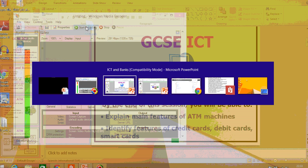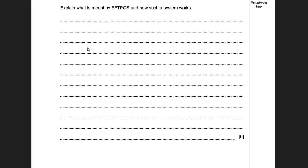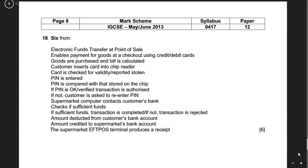Let's have a look at typical exam questions. One involves EFTPOS terminals. If you break it down: E is Electronic, F is Funds, T is Transfer, and P is Point Of Sale — so Electronic Funds Transfer at the Point of Sale. Point of sale is simply the point where you hand over your card to make a purchase. The exam asks what is meant by this and how the system works, for six marks. The exam board's answer explains that EFTPOS enables you to pay for goods using credit and debit cards.